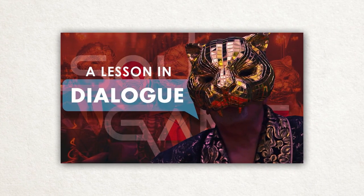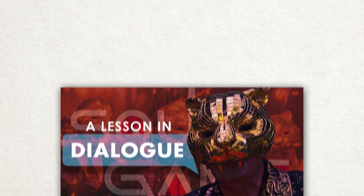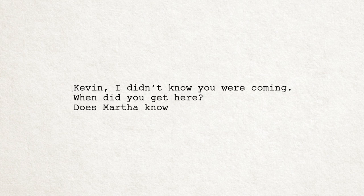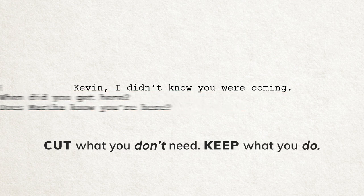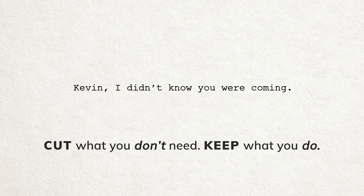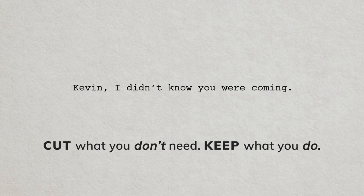Number eight: the three-line rule. I did a full video on this linked below. This is a dialogue problem I see again and again, where a character is saying the same thing multiple times. For example, a character might say: 'Kevin, I didn't know you were coming. When did you get here? Does Martha know you're here?' When you see this in your script, cut the two lines you don't need and keep the one you do. This is one of the easiest fixes you can make, and you will find it lets your scenes move much faster without the extra weight of useless dialogue.